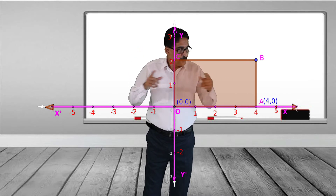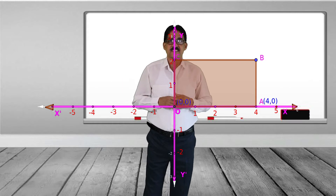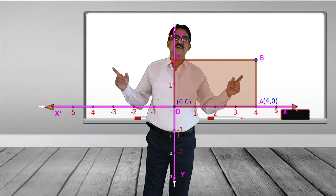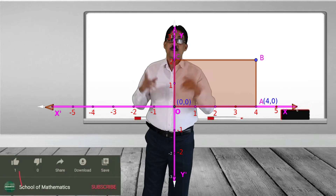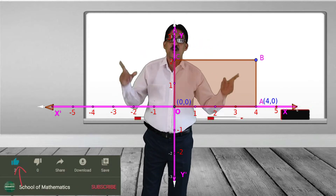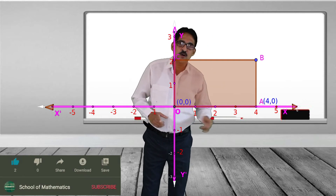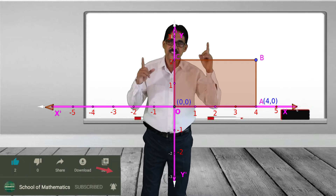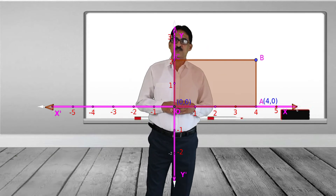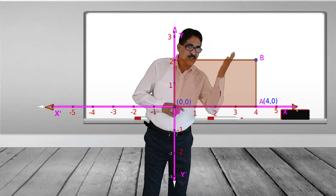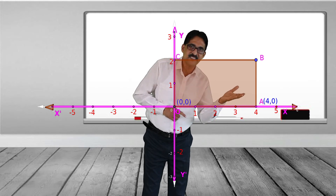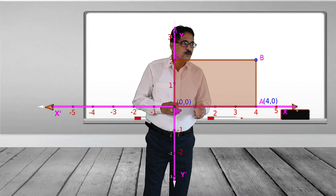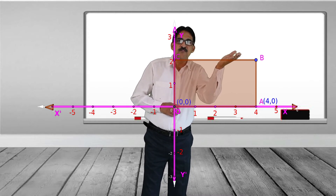We should understand that every point on the x-axis has its y-coordinate equal to 0, whatever point we take on the x-axis. And at the origin, both x-coordinate and y-coordinate are 0. So the coordinate of A is (4, 0).